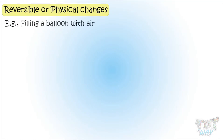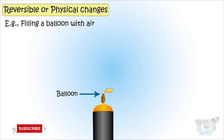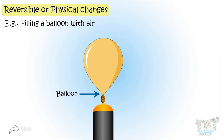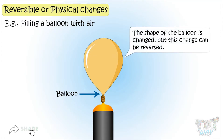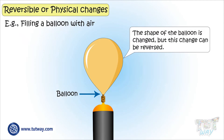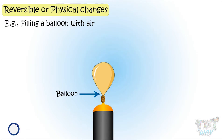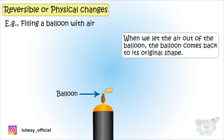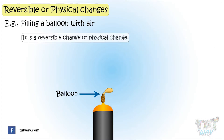Filling a balloon with air. Here we have a balloon. Let's fill it with air. Now its shape is changed, so there is a change in the shape of a balloon. But this change can be reversed, as we can let the air out of the balloon and the balloon will come back to its original shape. So it's a reversible change or a physical change.